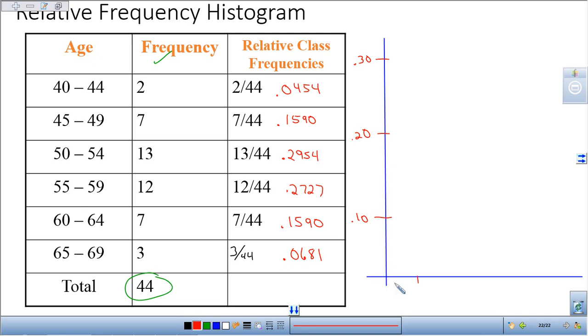This is that first category, and this is 40 to 44, and that went up to about 0.0454. So right there, and just like before, 0.0454. My next one, 45 to 49, let me go ahead and mark these off, 50 to 54, 55 to 59, 60 to 64, and 65 to 69. And then just like before, here is right around 0.1590, and this one goes all the way up here, just a hair under 30, so I'll do it this way there. So 0.2954, this one here is right around 0.2727.